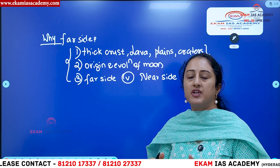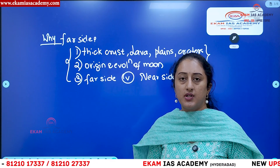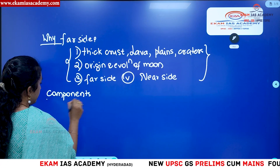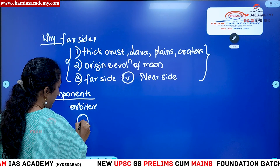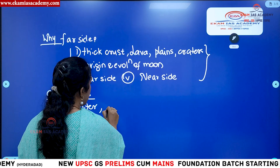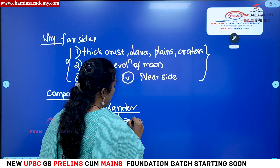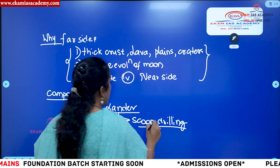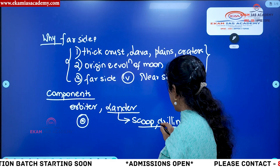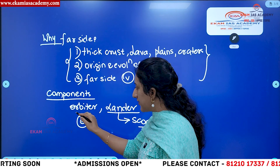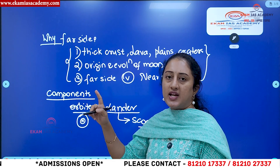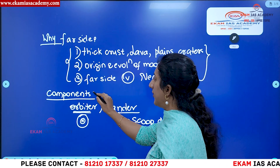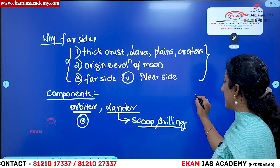The components of the Chang'e 6 mission include an orbiter, which orbits around the moon, and a lander. The lander's job is to scoop and drill the surface of the moon and collect material. The orbiter and service module then capture the material and communicate it back to ensure it re-enters the earth's surface. That is how the Chang'e 6 mission operates.